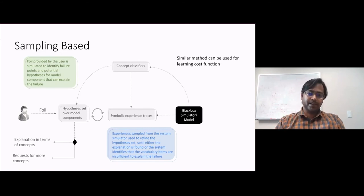These sampled experiences are first converted into symbolic traces using the concept classifier, then used to update the hypothesis set. The process ends with either the system identifying an explanation which is sufficient to be provided to the user, or realizing that the current vocabulary set is insufficient to provide a useful explanation to the user so that the system can ask for more concepts from the user.